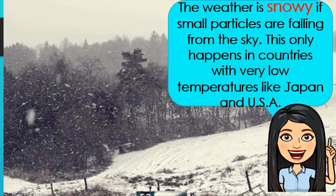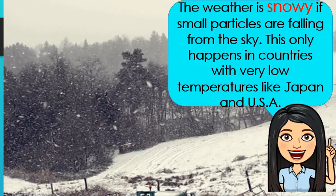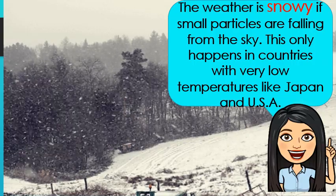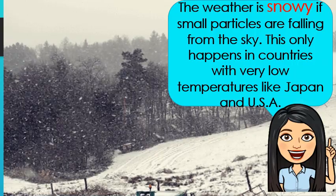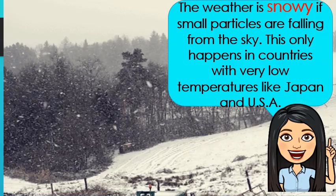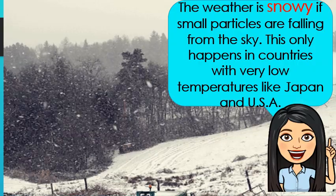It is snowy if small particles are falling from the sky. This only happens in countries with very low temperatures, like Japan and the USA. Snow forms when the atmospheric temperature is at or below freezing — 0 degrees Celsius or 32 degrees Fahrenheit. There also needs to be a certain amount of moisture in the air for it to snow. As long as there is enough moisture for water to form crystals, snow can appear. In places that are near the equator, it is almost always too warm to snow.